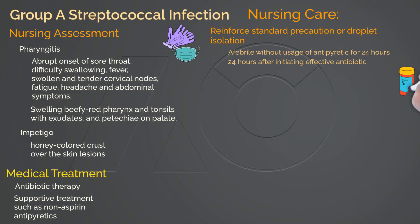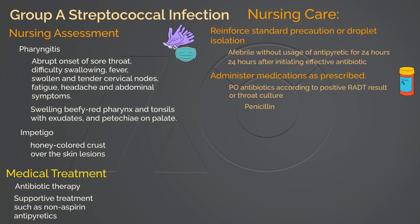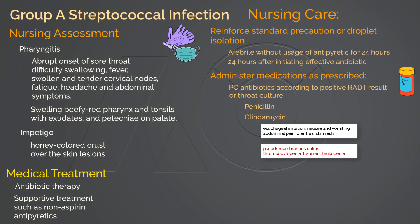Administer medications as ordered. Antibiotics should be given at consistent intervals and the full course should be completed. Penicillin is the choice of antibiotic; however, if the client is allergic to penicillin, oral macrolides or clindamycin can be used. Clindamycin is an effective antibiotic by prohibiting protein synthesis of the bacteria. Common adverse effects include esophageal irritation, nausea and vomiting, abdominal pain and diarrhea, and skin rash. Severe side effects include pseudomembranous colitis, thrombocytopenia, and transient leukocytopenia. The worst adverse effect associated with clindamycin is Clostridioides difficile-associated diarrhea, which can be fatal.